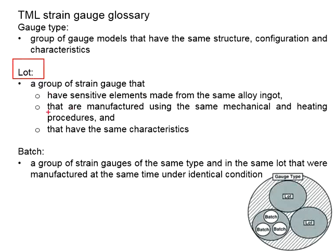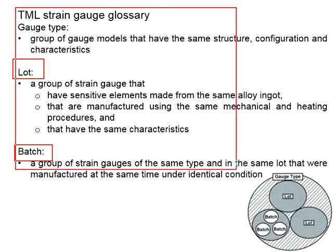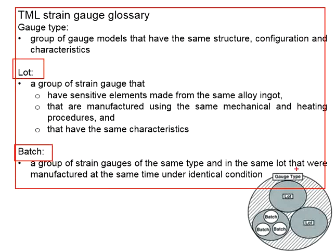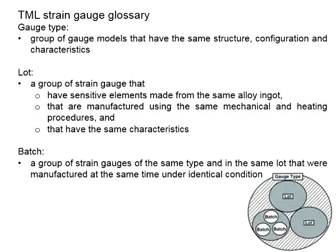We discussed the meaning of the log number as well as the batch number when covering the terminology used by TML Stringage. In general, the log number refers to a group of stringages having similar characteristics and specifications, made of similar materials and procedures. As for the batch number, it refers to a group of stringages which are manufactured at different times under identical conditions.